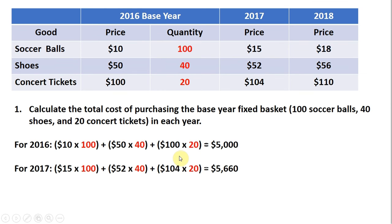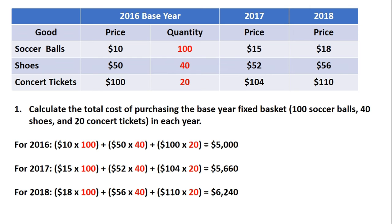What is the cost of this fixed basket in 2017? Using 2017 prices, it is 15 times 100, 52 times 40, and $104 times 20. The quantities never change — the prices will change, but the quantities from the base year fixed basket will not. And finally in 2018, we evaluate that fixed basket at 2018 prices: 18 times 100, 56 times 40, and 110 times 20. Adding that up, the cost of the fixed basket in 2018 is a little over $6,000.